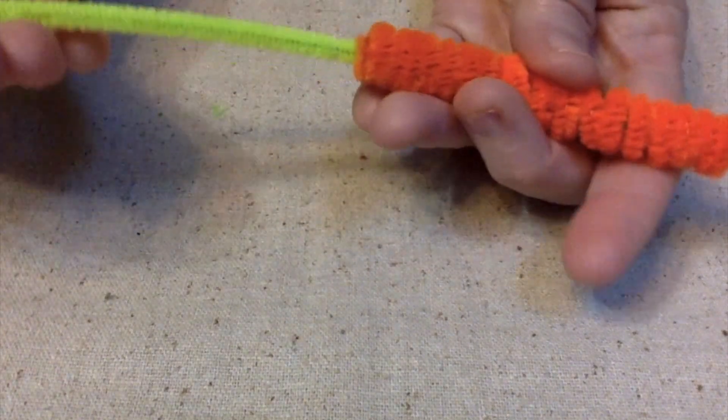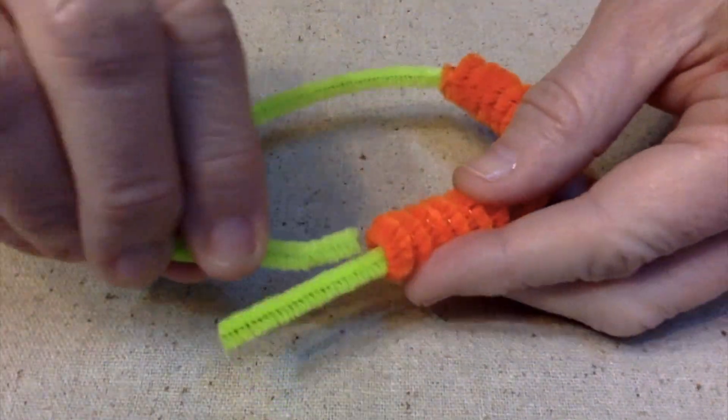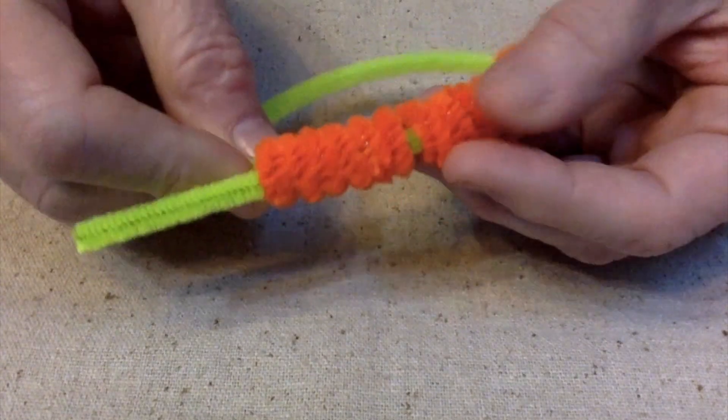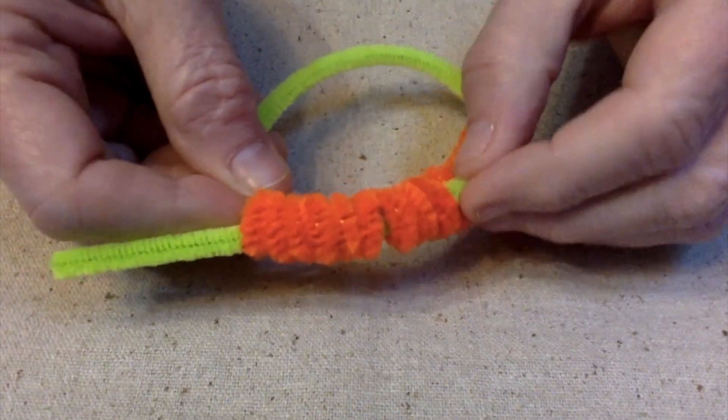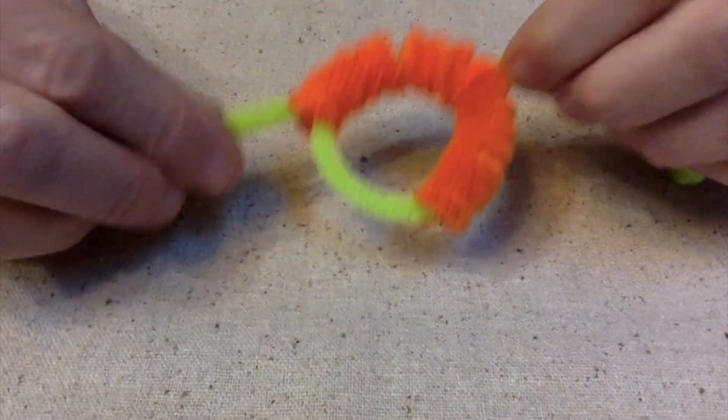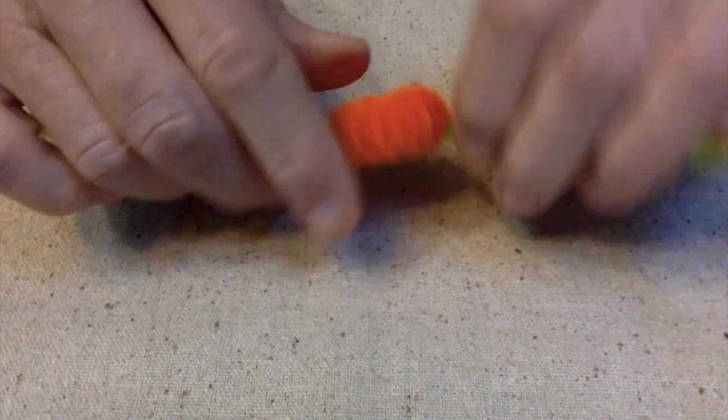And the long end, you're going to take around and stick it through there. And you're only going to go about halfway-ish. You don't have to be perfect. And once that's poking out, you're just going to pull it. And when you pull it, you're going to make a little circle.